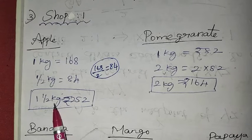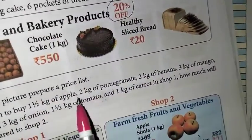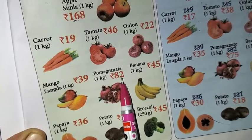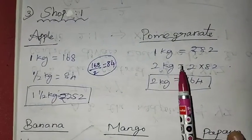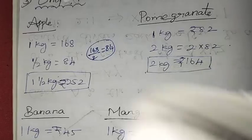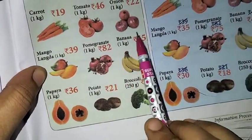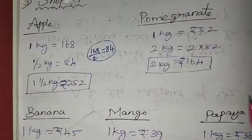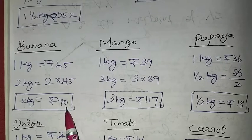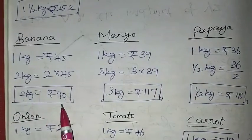For pomegranate, we need 2 kg. In Shop 1, 1 kg = Rs. 82, so 2 kg = Rs. 164. For banana, 1 kg = Rs. 45, so 2 kg = Rs. 90. So apple = Rs. 252, pomegranate = Rs. 164, banana = Rs. 90.